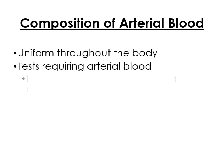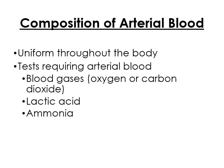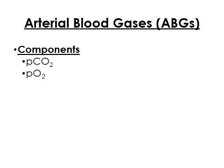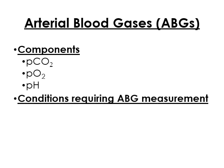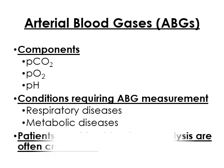So what are the compositions of the arterial blood? It is uniform throughout the body. The tests requiring arterial blood gases include oxygen, carbon dioxide, lactic acid, and ammonia. The components of ABG are the partial pressure of carbon dioxide, partial pressure of oxygen, and pH. Conditions requiring ABG measurements are metabolic disorders and respiratory diseases.